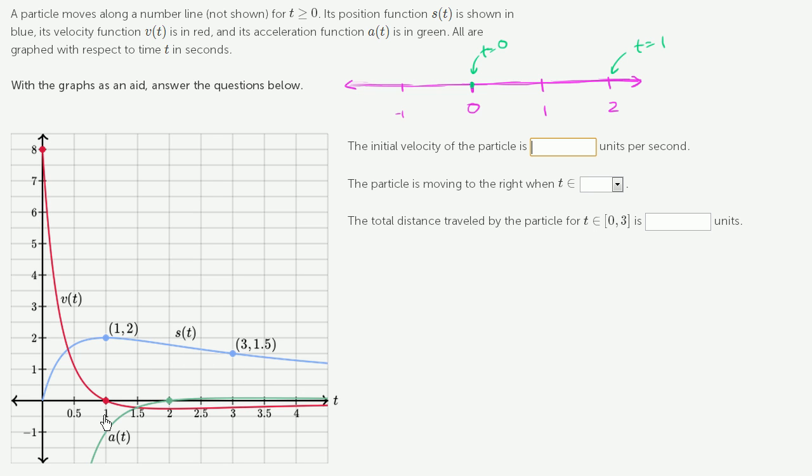Our velocity function, which is the derivative of the position function, is telling that story. Out the gate, we have a high positive velocity, but we decelerate quickly, and at 1 second our velocity is 0, and then we start having a negative velocity, which means we're moving to the left. So fast rightward velocity, but we decelerate quickly, stop at time equals 1 second, and then we start drifting to the left.